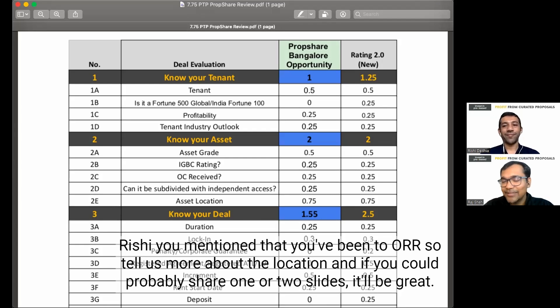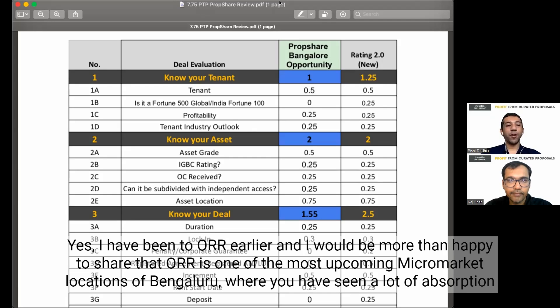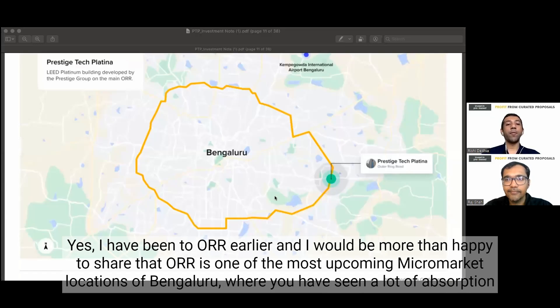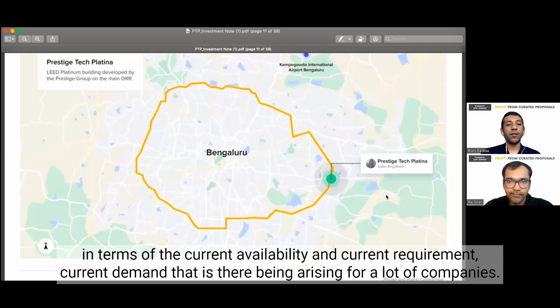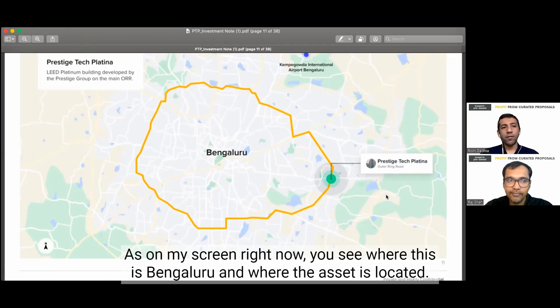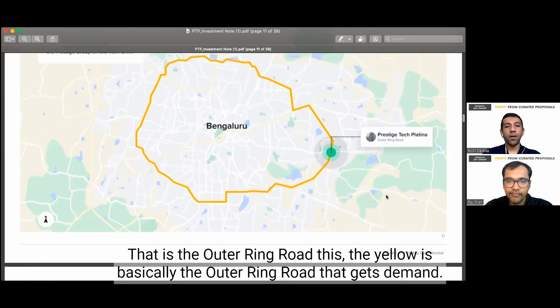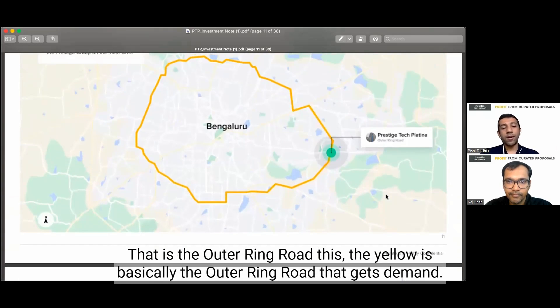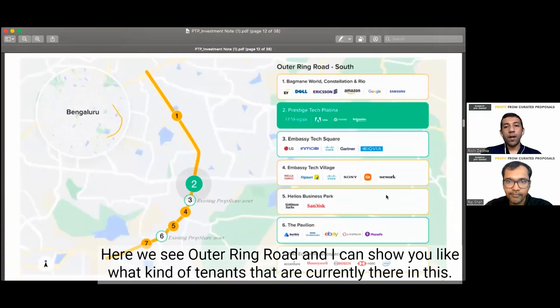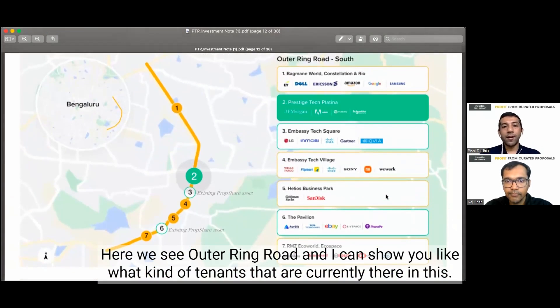You mentioned that you've been to ORR. So tell us more about the location. And if you could probably share one or two slides, it will be great. Of course. Yes, I have been to ORR earlier. And I would be more than happy to share that ORR is one of the most upcoming micro market locations of Bangalore, where you have seen a lot of absorption in terms of the current availability and current requirement, current demand that is there arising for a lot of companies. As on my screen right now, you see where this is Bangalore and where the asset is located. That is the outer ring road. The yellow is basically the outer ring road.